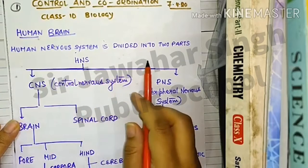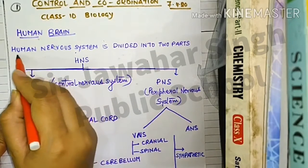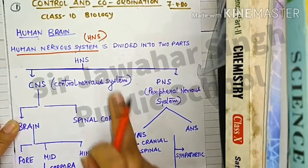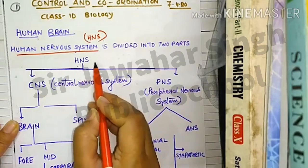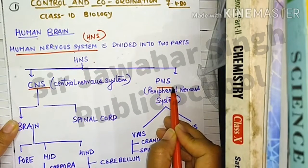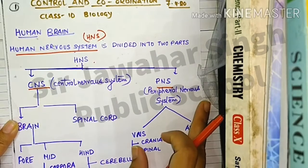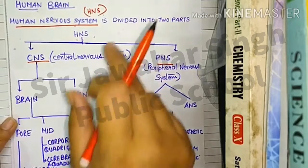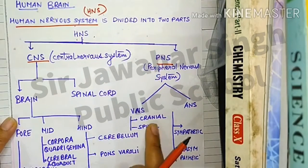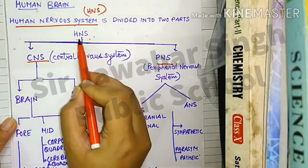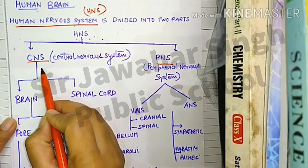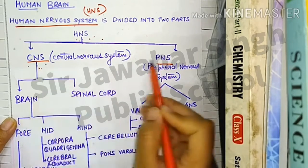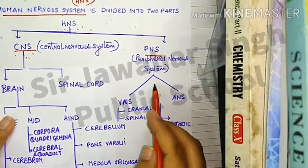The human nervous system, abbreviated as HNS, is divided into two parts: CNS (Central Nervous System) and PNS (Peripheral Nervous System). You must remember that ANS comes under PNS. PNS stands for Peripheral Nervous System.